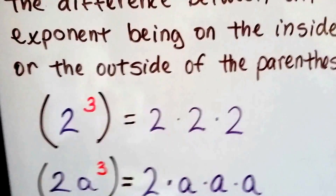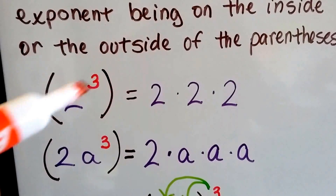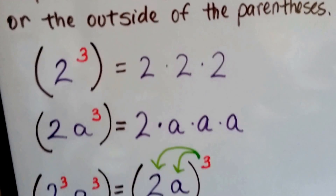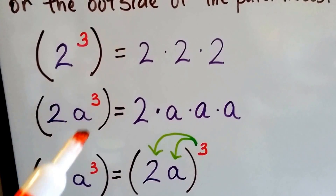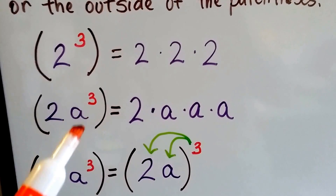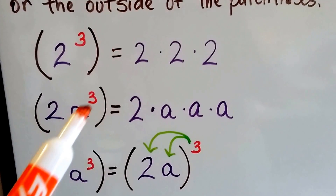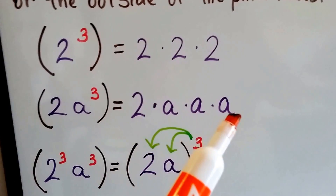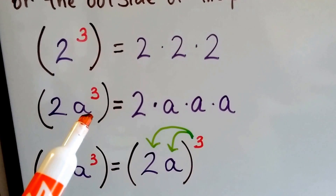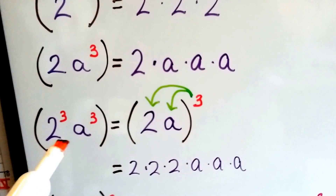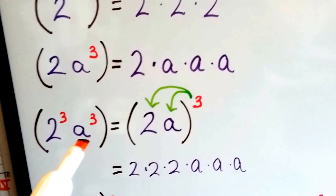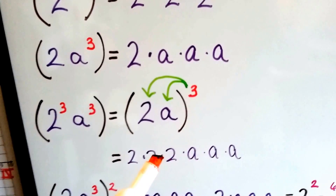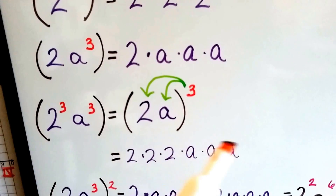So let's take a look at this first one. We've learned that two to the third power just means two times two times two — there are three twos. If we see two a to the third power, we have to remember that the exponent only affects the number or variable it's next to. So this means two times a times a times a — it only affects the a. When we see two to the third power and a to the third power, it means they're both to the third power: two times two times two, and a times a times a.